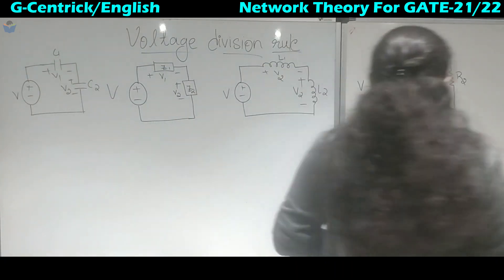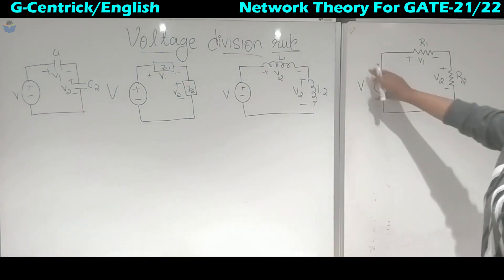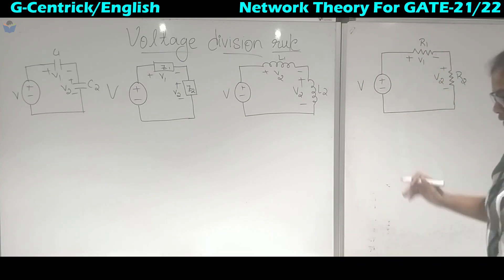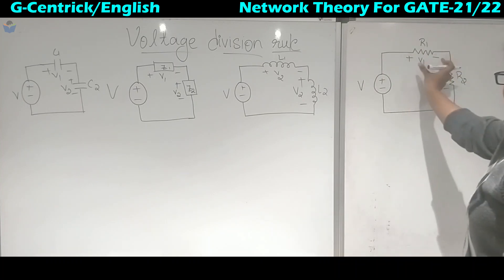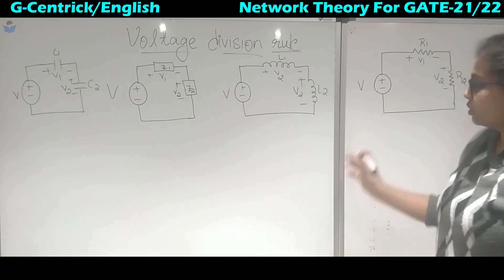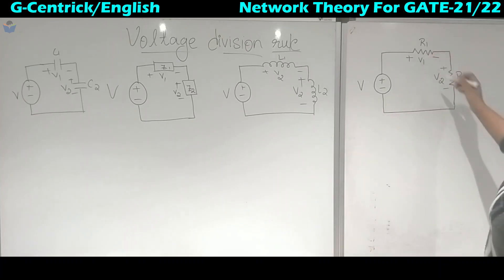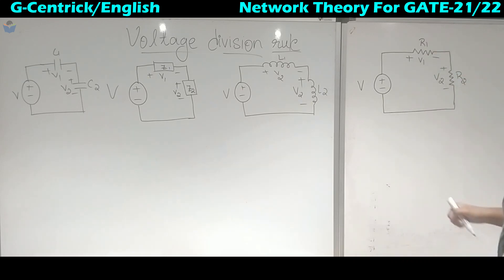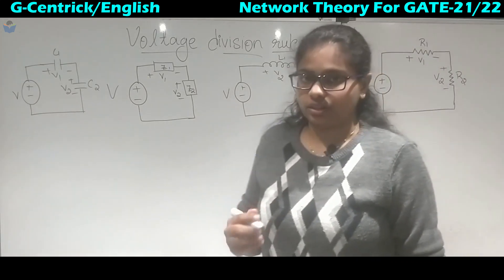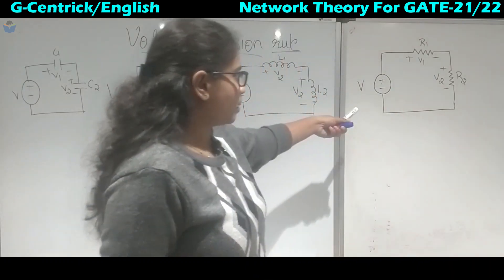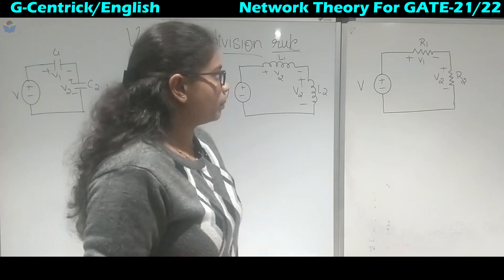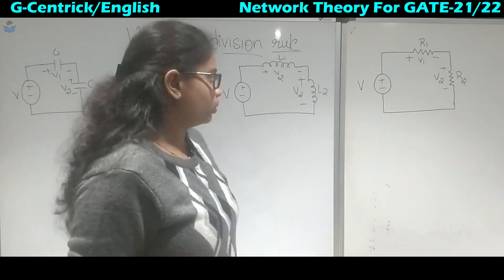Here in this circuit diagram, we have one voltage source and two resistors R1 and R2. We need to find the voltage drop across R1 and R2. The condition for applying the voltage division rule is that it is applicable only for one loop. If there are multiple loops, then we cannot apply the voltage division rule.